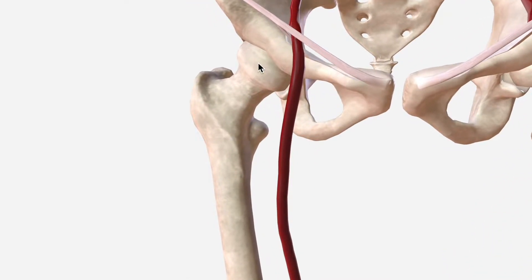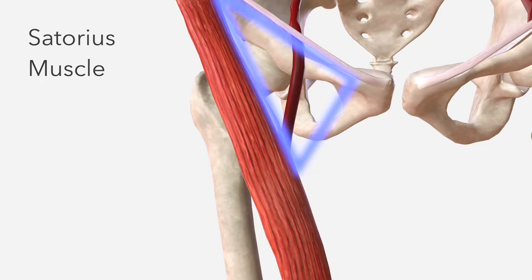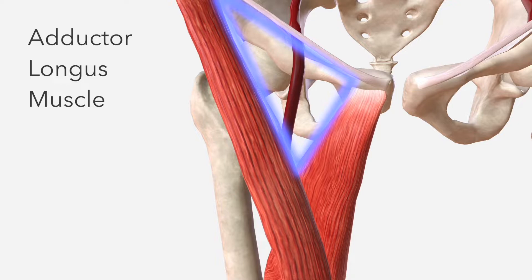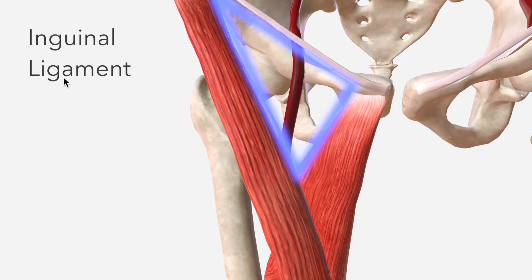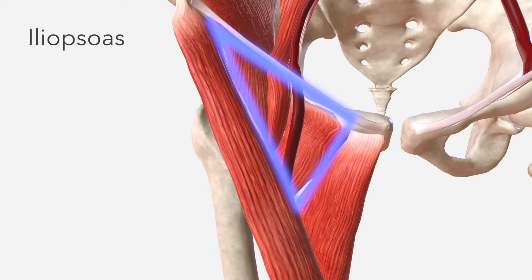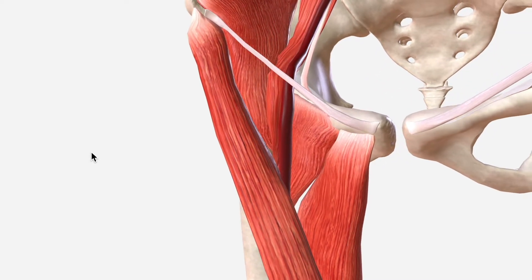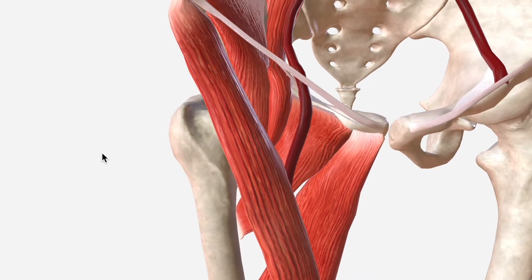As the femoral artery passes under the inguinal ligament, it immediately enters the femoral triangle, which is highlighted in blue here. It's an anatomical space bordered laterally by the sartorius muscle, medially by the adductor longus muscle, and superiorly by the inguinal ligament. The floor of the femoral triangle is made up by the pectineus muscle and iliopsoas as well. Being familiar with this space is important to a solid understanding of the anatomy of the femoral artery.